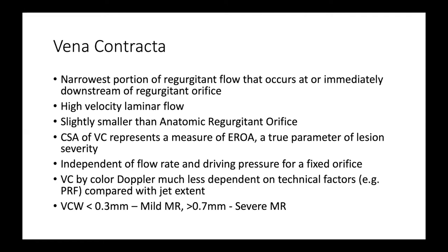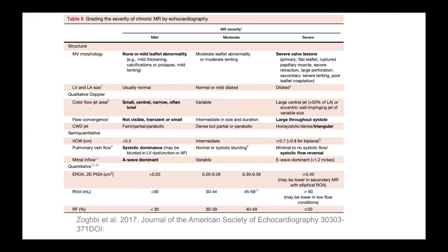The vena contracta is a 2D measurement. If the 2D measure is less than 0.3 centimeters it's considered mild, and greater than 0.7 it's considered severe. There is a table by Zoghbi for the 2017 guidelines which looks at a number of parameters including LV size, MV morphology, color flow jet area, flow convergence, and Doppler data.